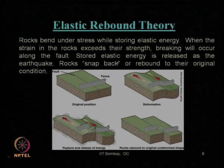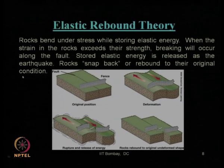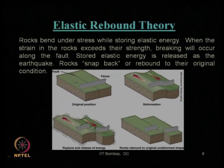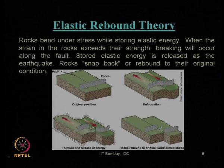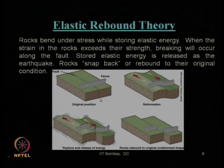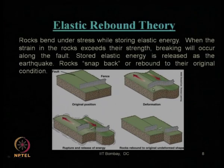Rocks snap back — that is the terminology we typically use — when rocks break, we call it snap back or rebound to their original condition. If we see this as the initial condition of two rock blocks, basically it is one rock block with a weaker plane or weaker portion within that rock, which we identify as a fault. The structure constructed on that rock block is shown through a fence constructed on the ground surface. When the stored elastic energy exceeds the strength of that rock, they try to get deformed along that weaker plane.